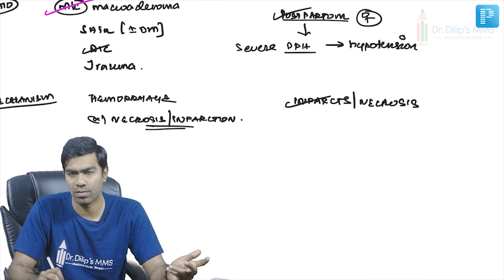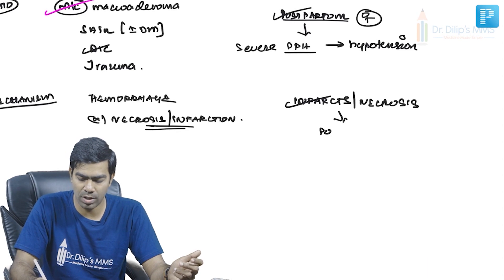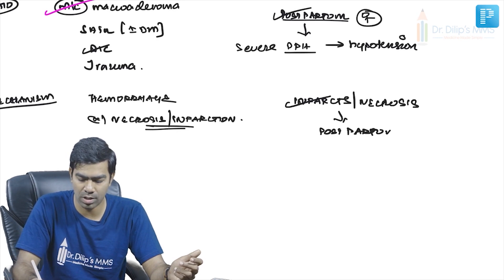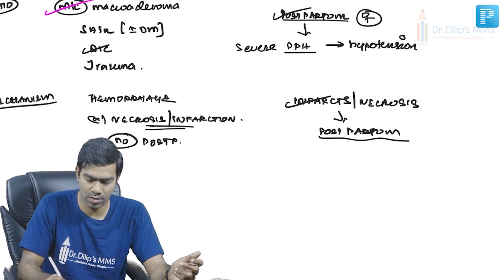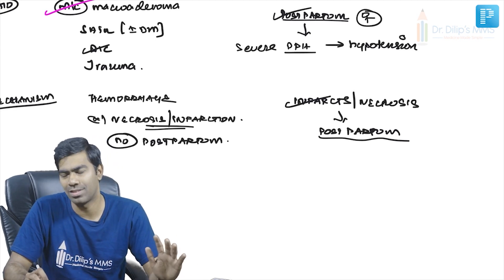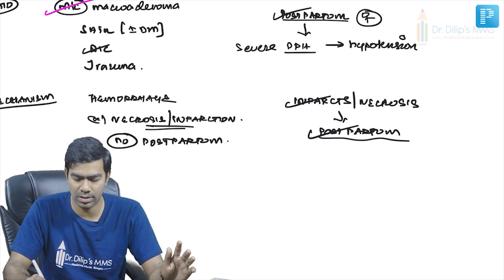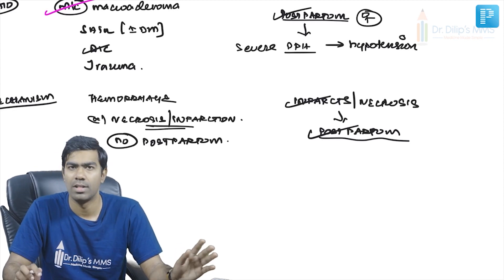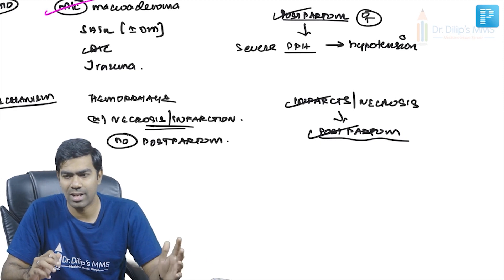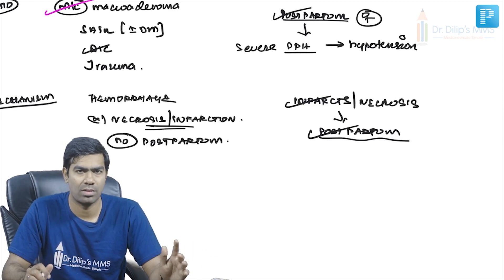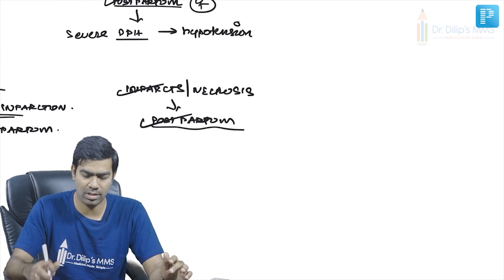Sheehan syndrome happens only postpartum, typically due to PPH, and in the exam these patients will not have a history of a postpartum period — so remember it is a postpartum disease causing infarction and necrosis. The question is: why does hypotension specifically affect the postpartum pituitary and not any other patient?